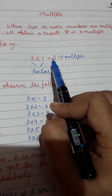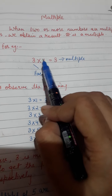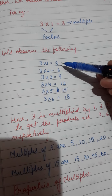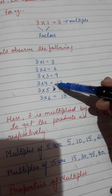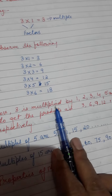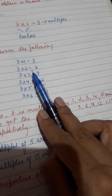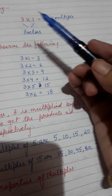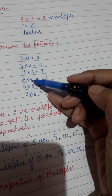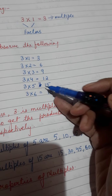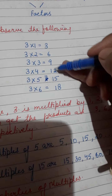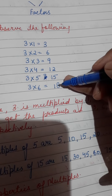Let's observe the following: 3×1=3, 3×2=6, 3×3=9, 3×4=12, 3×5=15, and 3×6=18. Here you can see that 3 is multiplied by 1, 2, 3, 4, 5, and 6 to get the results 3, 6, 9, 12, 15, and 18. So we can say that 3, 6, 9, 12, 15, and 18 are the multiples of 3.